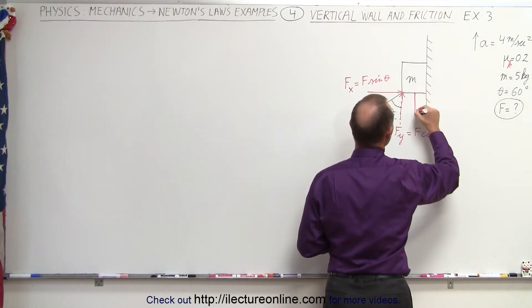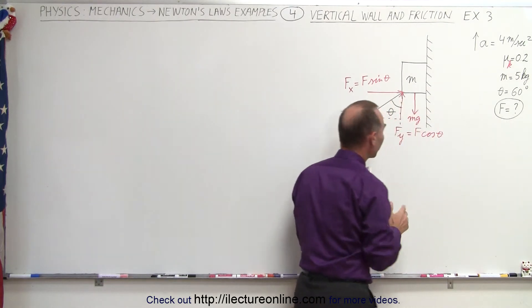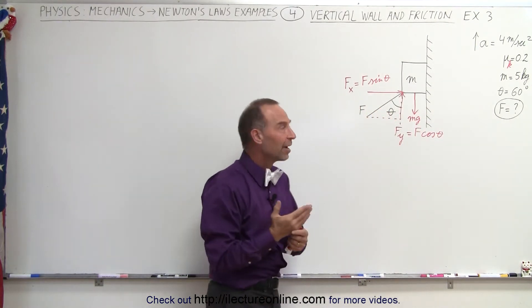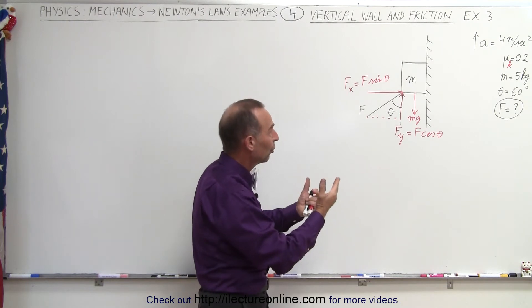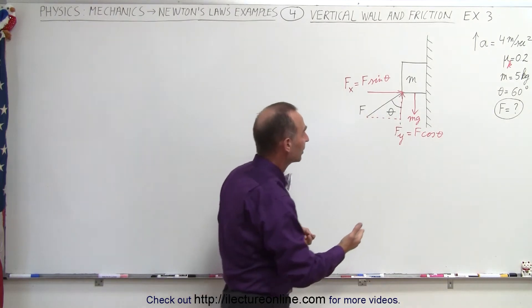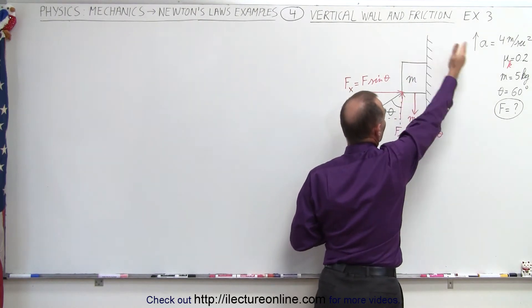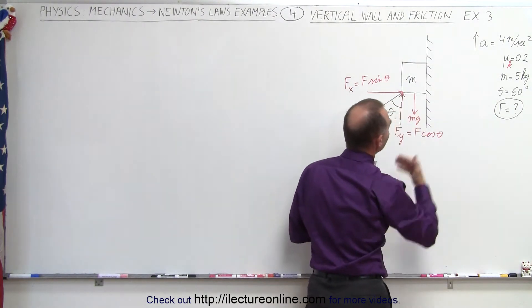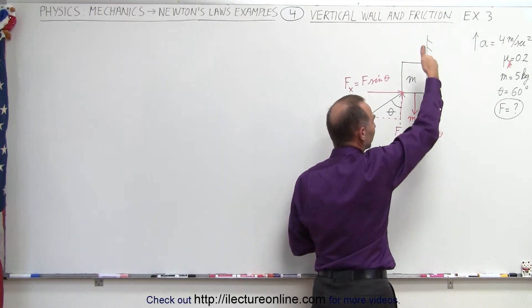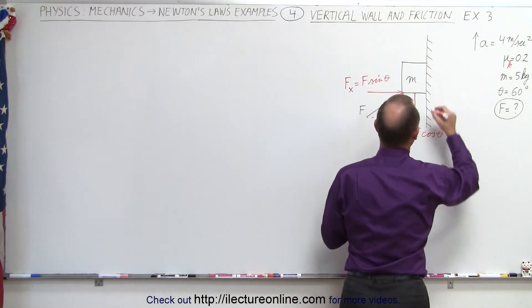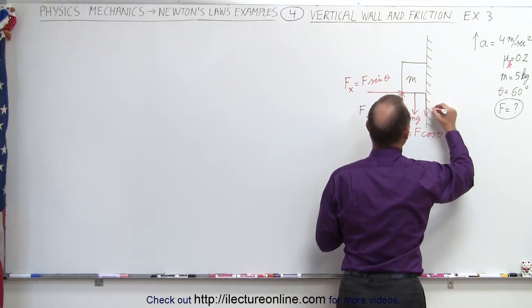We also have the weight due to gravity, mg, and notice the direction of the friction can be found by saying, if there was no friction, what would be the direction of the object, and clearly the object would be pushed upward in this direction according to the acceleration direction, therefore the friction force will be in the opposite direction. And we have the friction pointing downward.